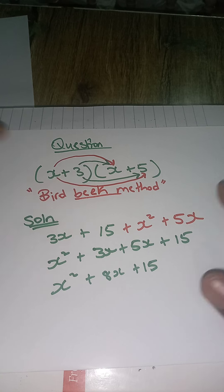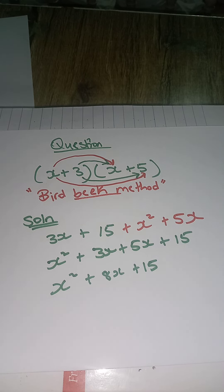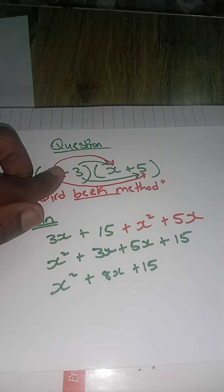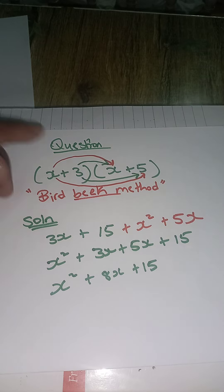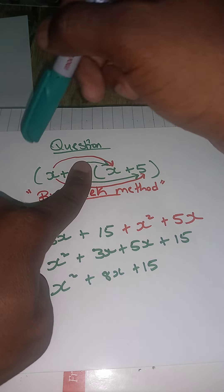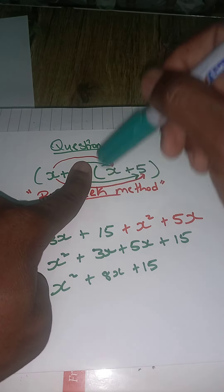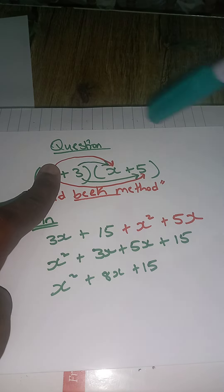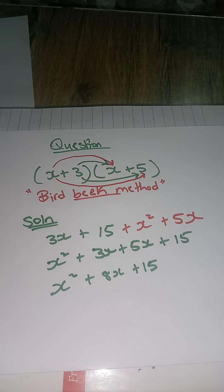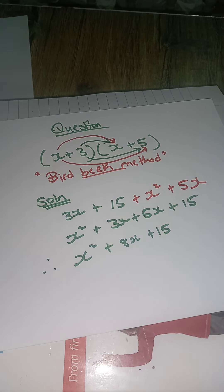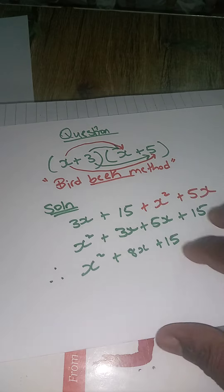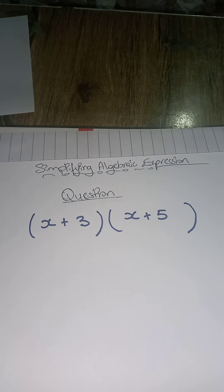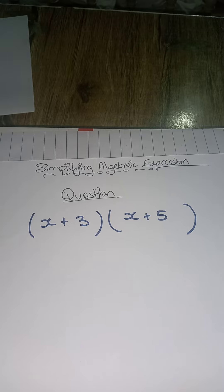After you get used to it, you won't cover it with your finger anymore — you'll cover it with your mind. You're looking at this and you're not paying attention to the x at the moment; you're focusing on the 3 first, then focusing on the x. But start out by putting a finger there: x times x is x squared, x times 5 is 5x, 3 times x is 3x, 3 times 5 is 15. That's the bird beak method.